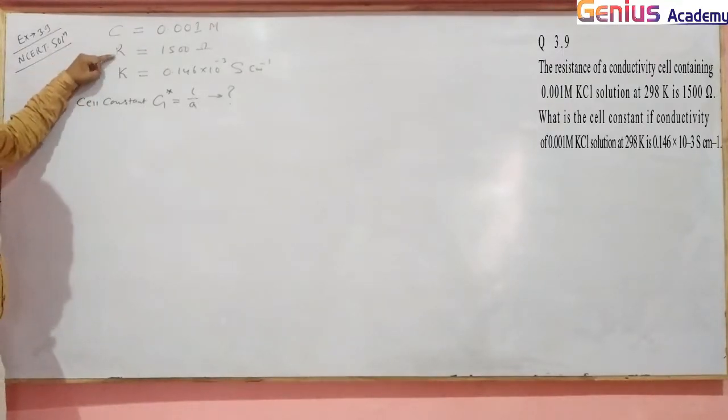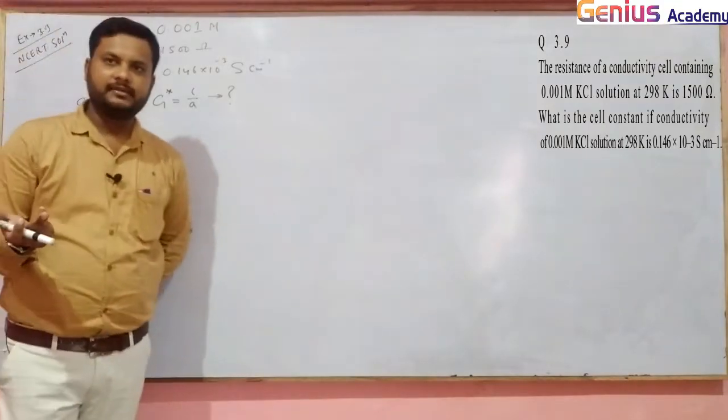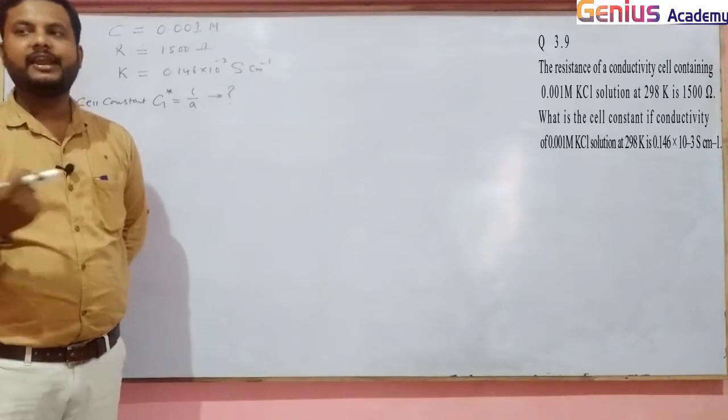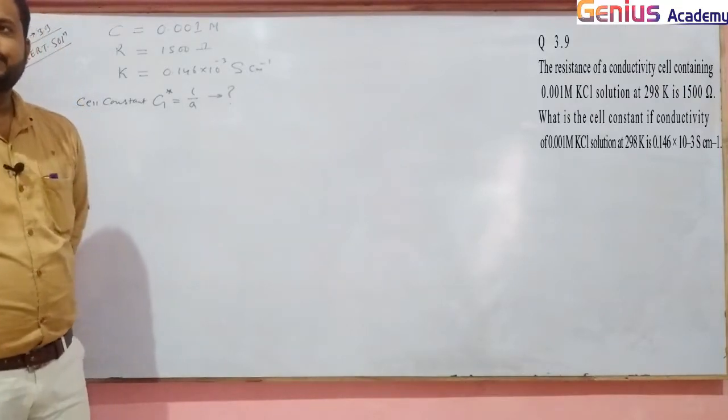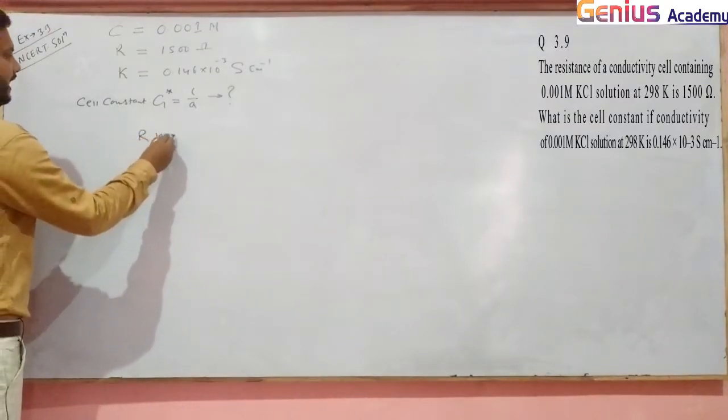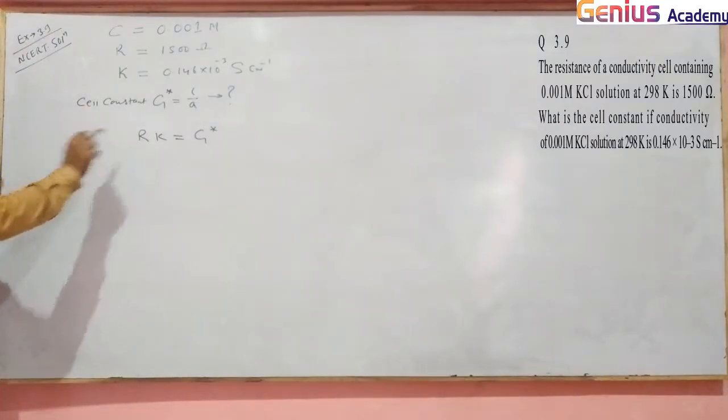To find the cell constant, I have a trick for you. Remember: R-K-G*. The formula is RK equals G*.